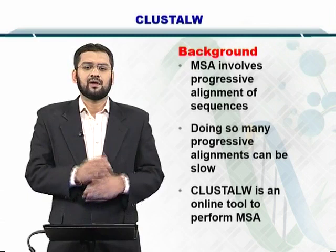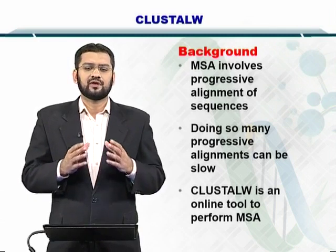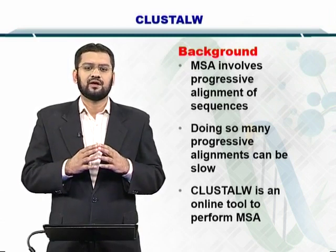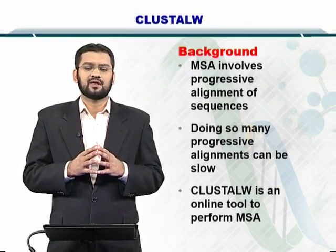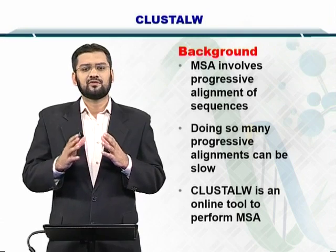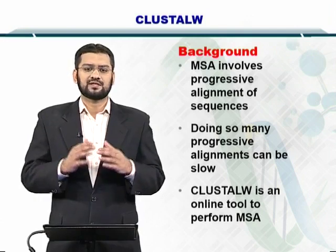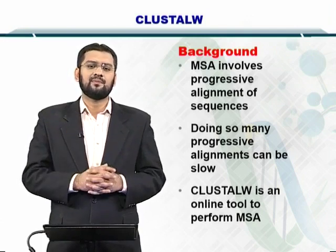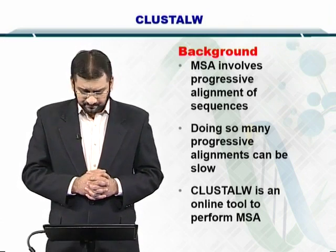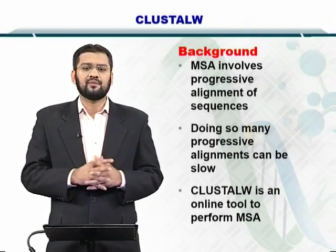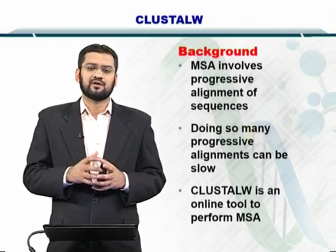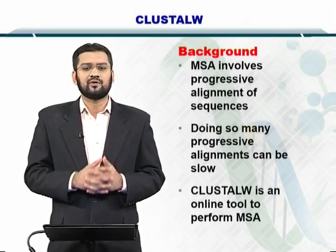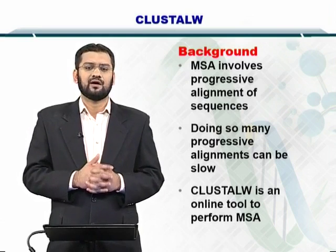Multiple sequence alignment involves alignment of sequences in such a way that you can extract the most similar sequences first, and then repeat this process for other sequences such that all the sequences end up in an alignment. Progressive alignments are used, and this entire process is essentially an iterative process — therefore we call it the progressive alignment.